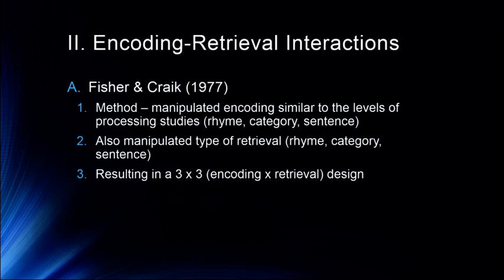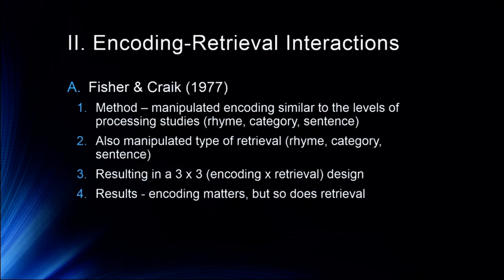This results in a three-by-three encoding-by-retrieval design — what we call a factorial design in experimental psychology. It's called a factorial design because we match each type of encoding with each type of retrieval. So some items will be encoded with a rhyme and retrieved with a rhyme; encoded with a rhyme, retrieved based on category; encoded with a rhyme, retrieved based on whether it fits into a sentence; and so on. There are really nine different conditions altogether.